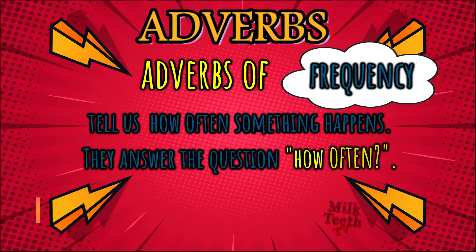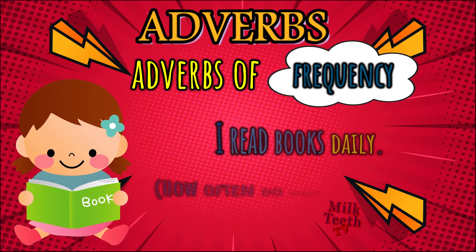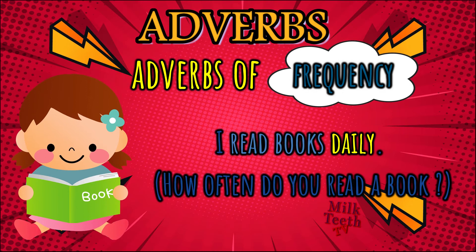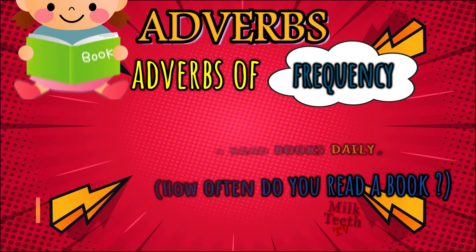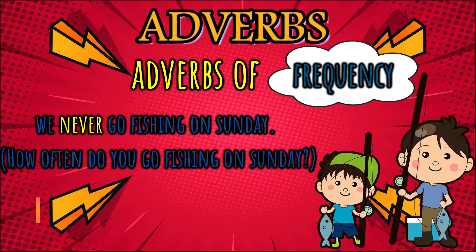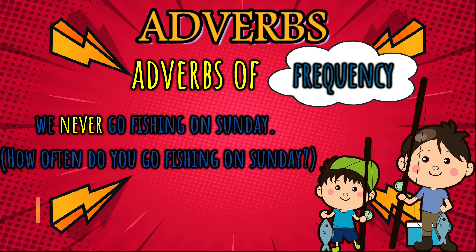Adverbs of frequency tell us how often something happens. They answer the question 'how often.' For example: I read books daily — 'read' is the verb, and how often do I read? Daily. So 'daily' is the adverb of frequency. We never go fishing on Sunday — how often do we go fishing on a Sunday? Never. So 'never' is the adverb of frequency.